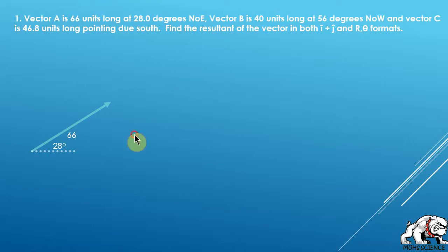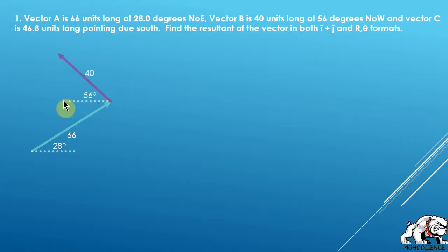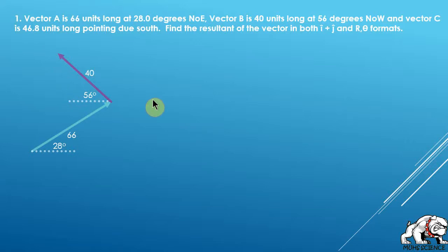Our second vector B is 40 units long at 56 degrees north of west, so I draw a dotted line going to the west, mark 56 degrees north of west, and the vector is 40 units long. Our final vector C is 46.8 units due south — that's just straight down.